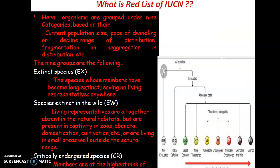What is meant by the Red List of IUCN? In the Red Data Book, most species are categorized into different groups based on certain criteria. Organisms are grouped under mainly nine categories based upon their current population size, their pace of decline, their range of distribution, and their fragmentation and segregation within the habitat and ecosystem. Based on these criteria, we classify organisms into nine different categories.